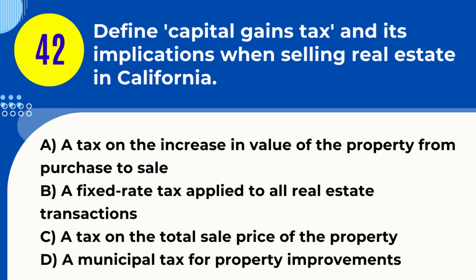Question 42. Define capital gains tax and its implications when selling real estate in California. A. A tax on the increase in value of the property from purchase to sale. B. A fixed rate tax applied to all real estate transactions. C. A tax on the total sale price of the property. D. A municipal tax for property improvements. Answer: A. Explanation. Capital gains tax is a tax on the profit realized from the sale of a non-inventory asset, such as real estate, that has increased in value. In California, this means if you sell a property for more than you purchased it, you may owe taxes on the profit or capital gain.